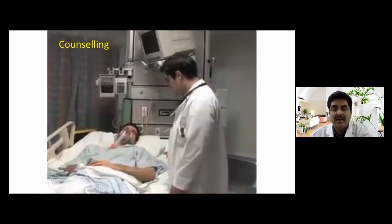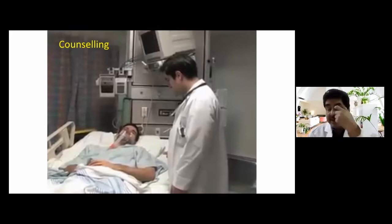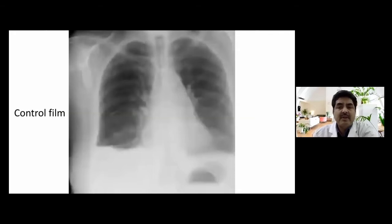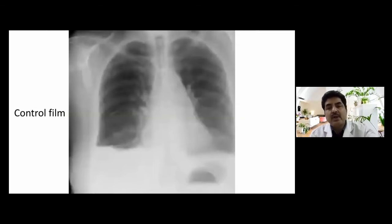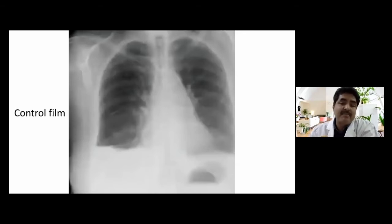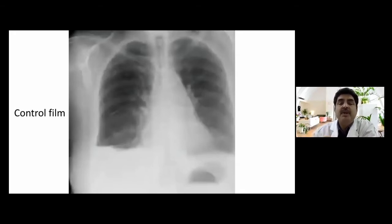For equipment, we first need a control film — a prior chest X-ray — to confirm the pathology and ensure we insert the tube on the correct side. Even if the patient is stabilized, a control film helps avoid errors, such as placing the tube on the wrong side. You need a sterilized chest tube tray with all equipment prepared.